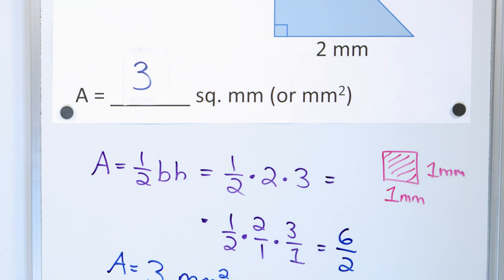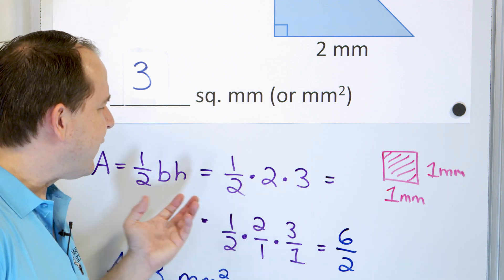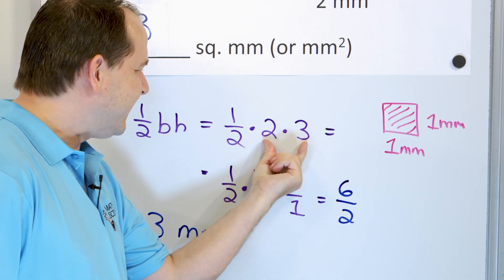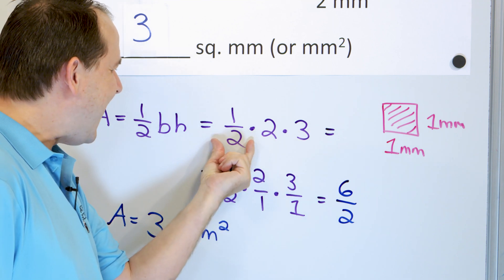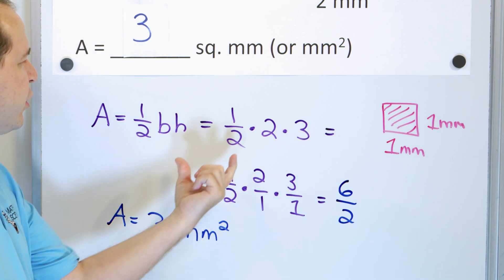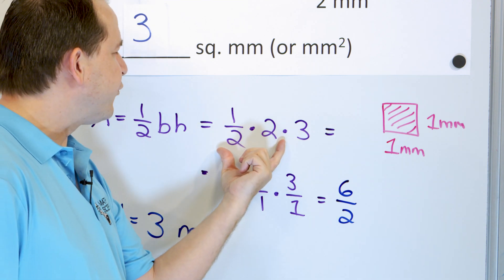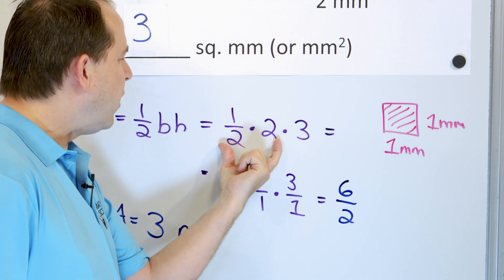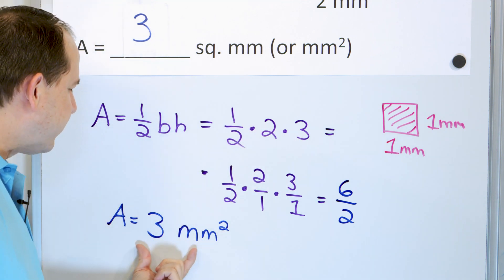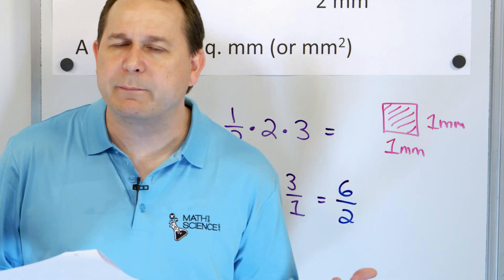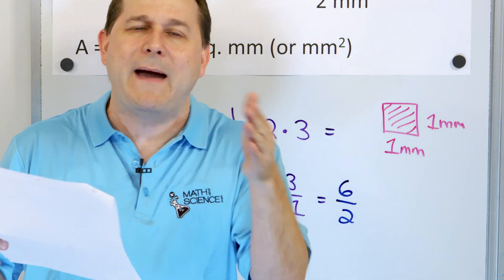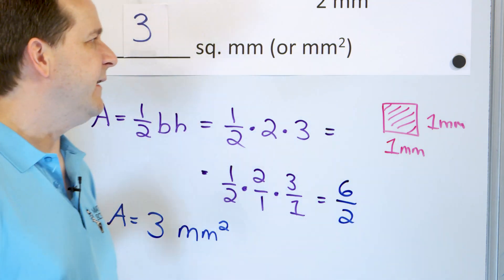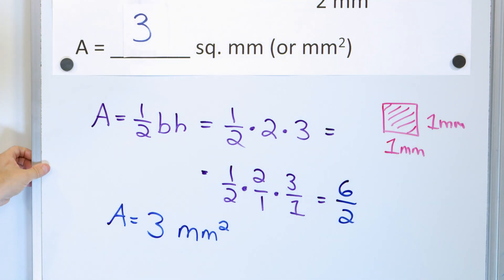One thing to note: I multiplied these as fractions, but you could just say two times three is six, then six times one-half is three. Or multiply in another order: one-half times two is one, and one times three is three — same answer. Because when you multiply things, the order does not matter. Whatever is more convenient for you is how I'd like you to do it.